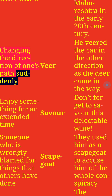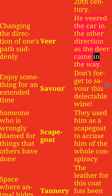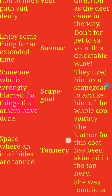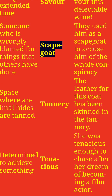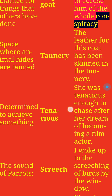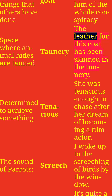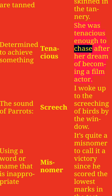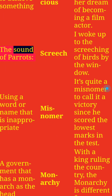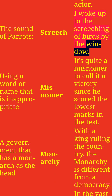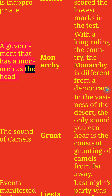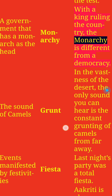Changing the direction of one's path suddenly: Swerve. He swerved the car in the other direction as the deer came in the way. Enjoy something for an extended time: Savor. Don't forget to savor this delectable wine. Someone wrongly blamed for things others have done: Scapegoat. They used him as a scapegoat to accuse him of the whole conspiracy. Space where animal hides are tanned: Tannery. The leather for this coat has been skinned in the tannery. Determined to achieve something: Tenacious. She was tenacious enough to chase after her dream of becoming a film actor. Using a word or name that is inappropriate: Misnomer. It's quite a misnomer to call it a victory since he scored the lowest marks in the test. A government that has a monarch as the head: Monarchy. With a king ruling the country, the monarchy is different from a democracy.